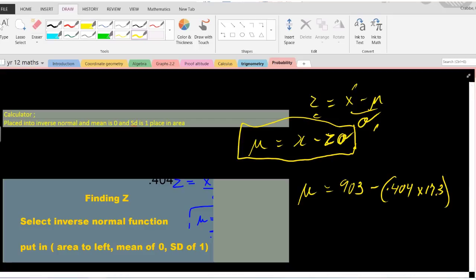When we calculate that all up, we get 903 minus 0.404 times 17.3, which equals 896. That's our mean.